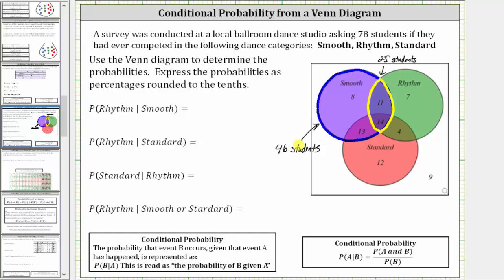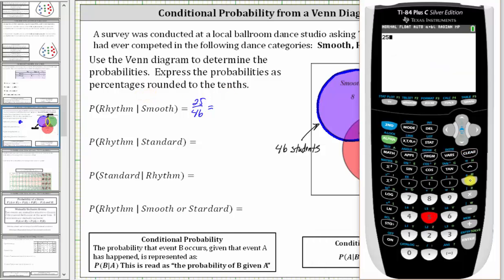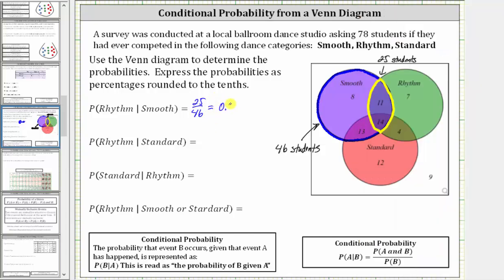Of the 46 students that competed in smooth, 25 of them also competed in rhythm — that's 11 plus 14. Therefore, the probability a student competed in rhythm given they competed in smooth is 25 out of 46. Converting to a decimal to three decimal places: 25 divided by 46 is approximately 0.543, which is 54.3%.